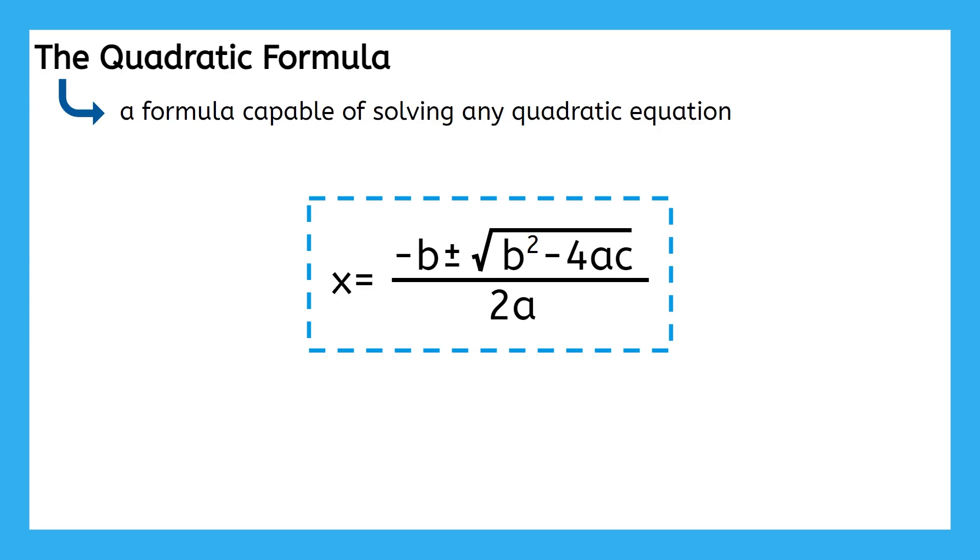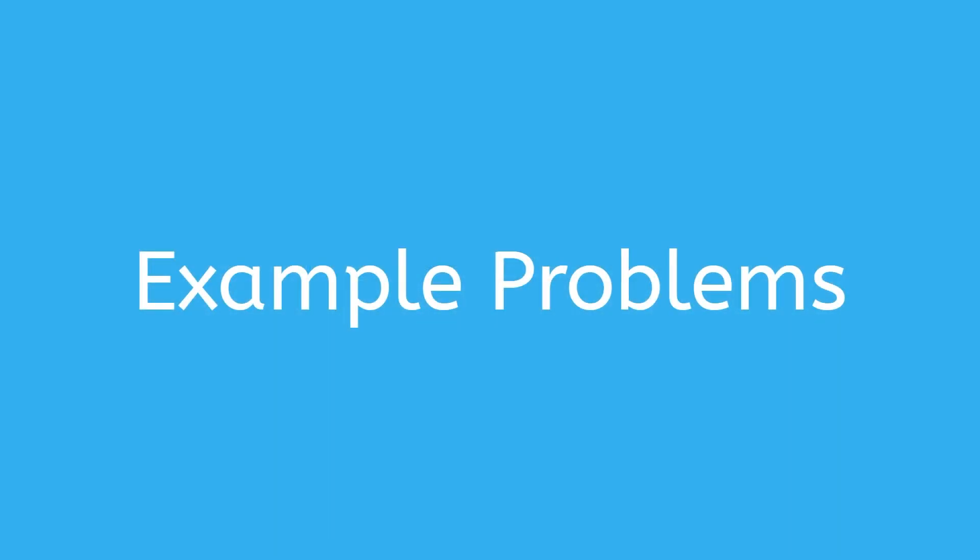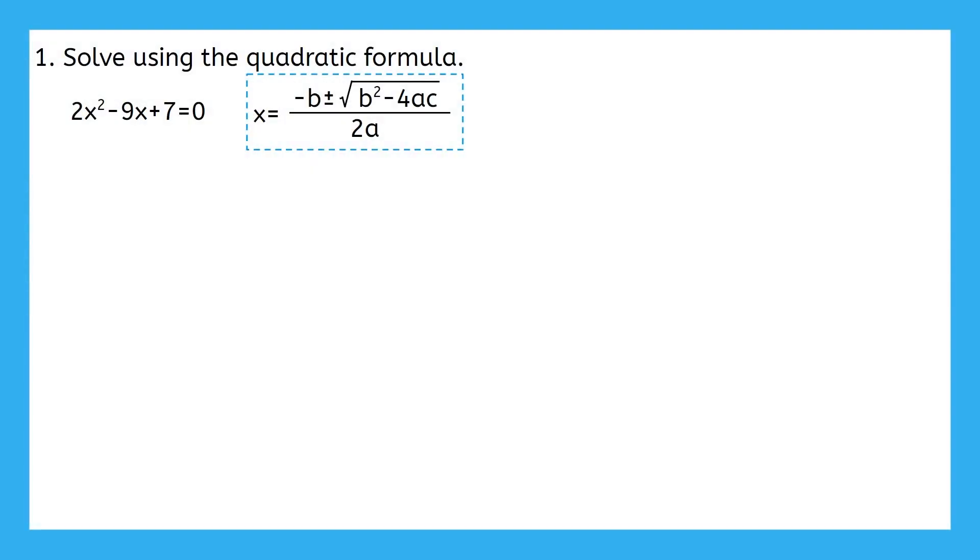So, what are we waiting for? Let's test it out with some example problems. We have the quadratic equation 2x squared minus 9x plus 7 equals 0, and we want to solve for x. All we have to do is substitute numbers in for the variables in the formula and solve. But what numbers should we use for a, b, and c?